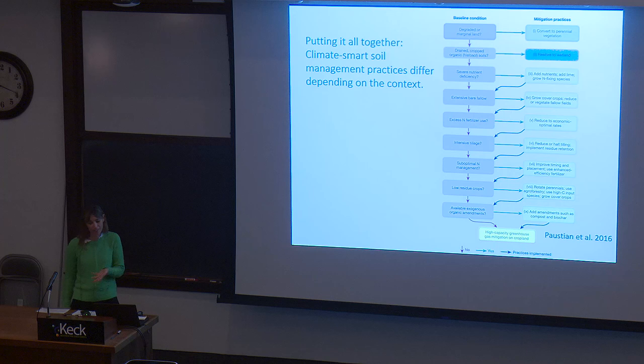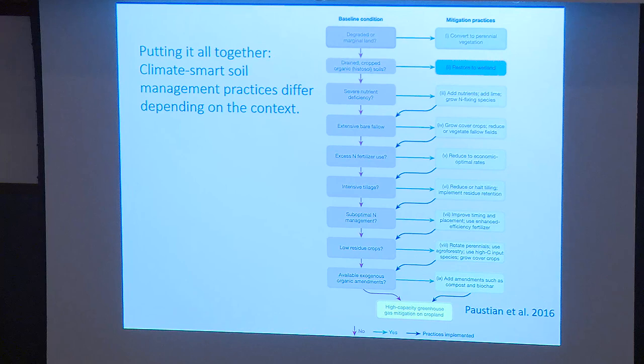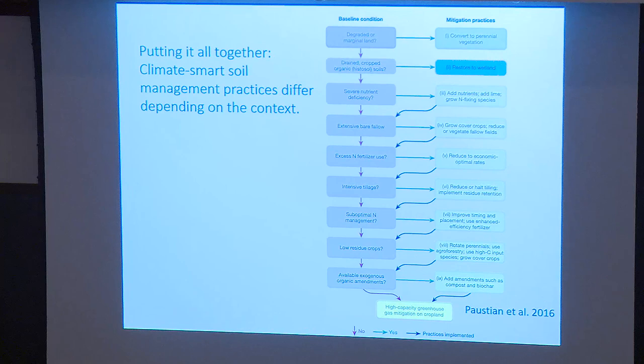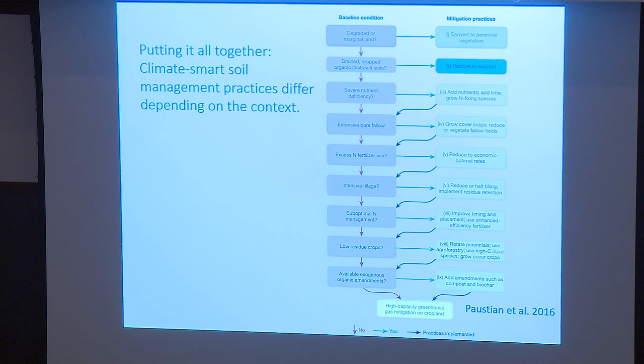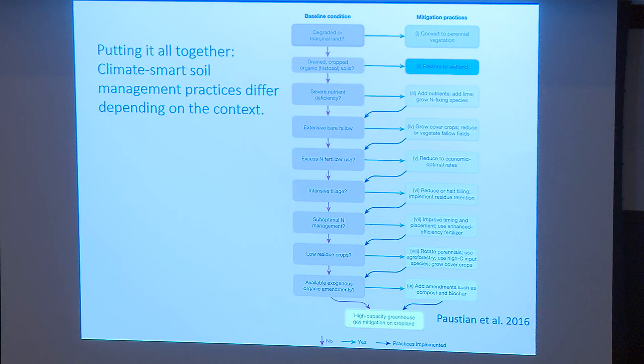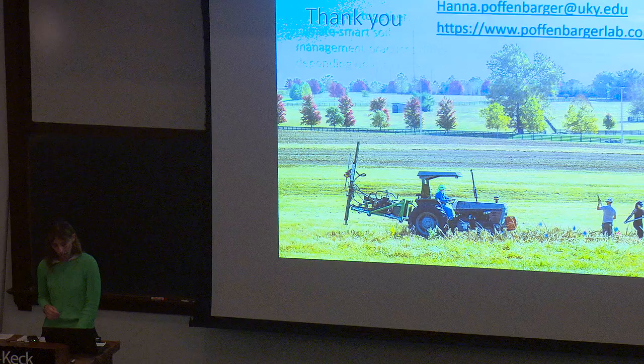I'll include something that really puts it all together: we've talked about a lot of different environmental and management controls, but the one that is best for a given farm or field will really depend on the environmental context and management history. Depending on what the baseline condition is, the appropriate mitigation practice is probably going to differ. The main point is there's no one-size-fits-all best management practice for climate-smart agriculture. Feel free to reach out to me by email as well.